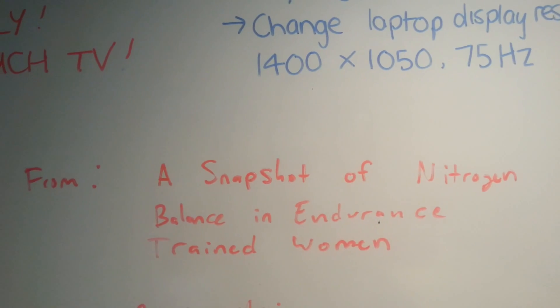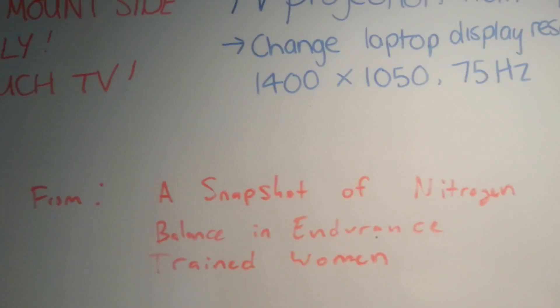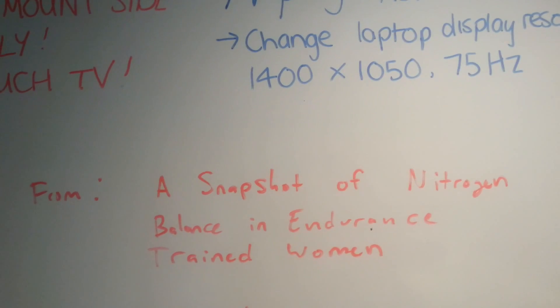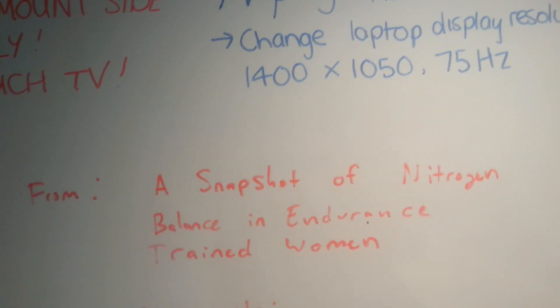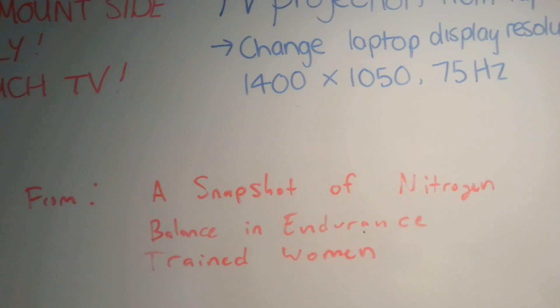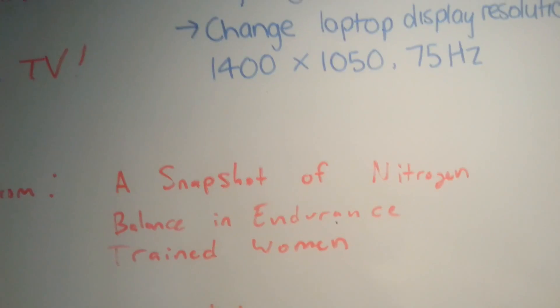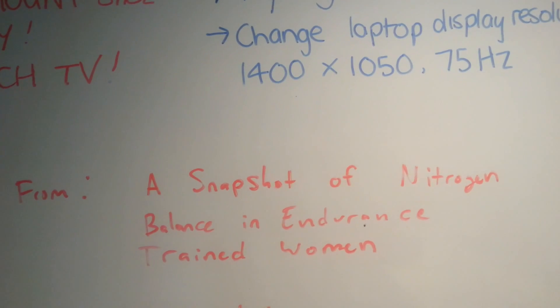I'm referring specifically to a study called A Snapshot of Nitrogen Balance in Endurance Trained Women. Just so we understand what we're talking about, nitrogen balance is a way of measuring protein requirement - that means the minimum amount of protein you need to not lose nitrogen. Nitrogen is present in protein, meaning the minimum amount of protein you need to consume in order to not be losing body protein.